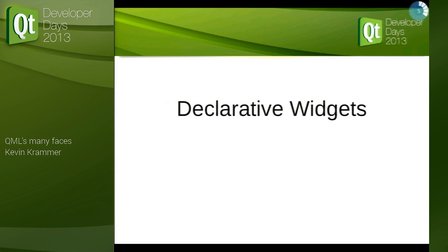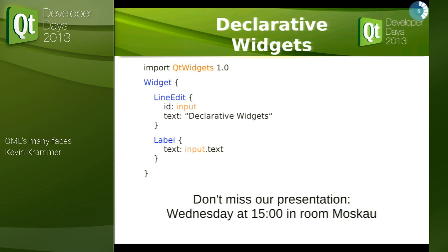The next thing is declarative widgets. The idea is we can instantiate anything that is a QObject, and QWidgets are QObjects. So why not use QML to create a QWidget tree? It looks like this: we import QtWidgets, we have a widget, inside that we have children, we can have layouts as well — but always the same syntax: import, elements, nested elements, identifiers, and bound properties. There is a talk by me and my colleague Tobias Koenig tomorrow at three o'clock in room Moscow if you're interested in the details.